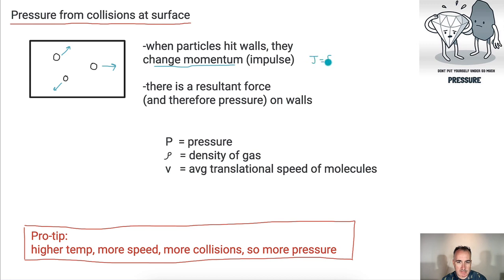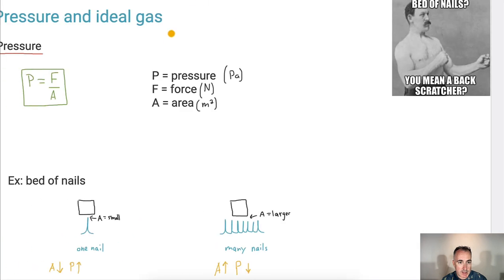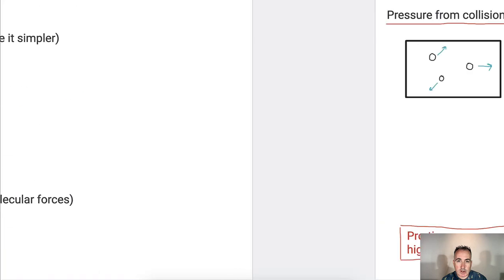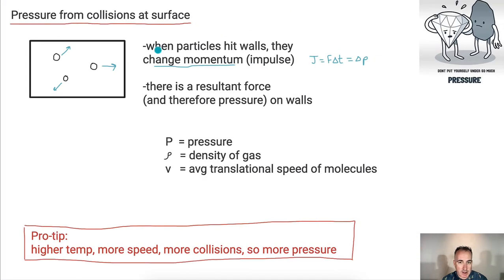Because it's going to change momentum. And if you change momentum, you have an impulse. Remember, J = F∆t = ∆P. What this means is that if you have a change in momentum, that means there must be some sort of resultant force. And if there's a force over a certain area, then there's probably a pressure. So because there's a change in momentum, that means there's an applied force. Because of that, there's a pressure on the walls. This is the key thing.